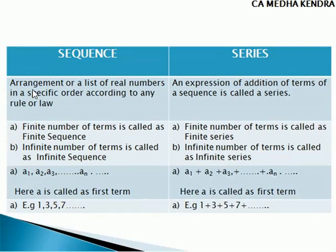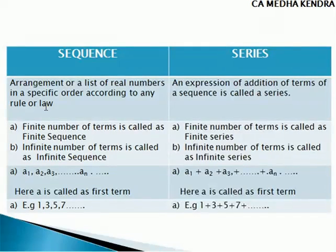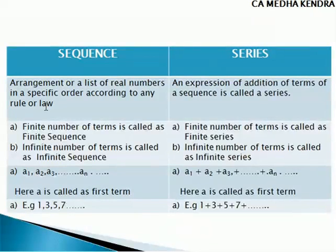First, we need to understand what is sequence and what is series. Sequence is nothing but an arrangement or list of real numbers in a specific order according to any law or rule. The rule may be like arranging odd numbers in a list — 1, 3, 5, 7 — or even numbers, or numbers divisible by 4 or 5. Any rule can be given to form the sequence.